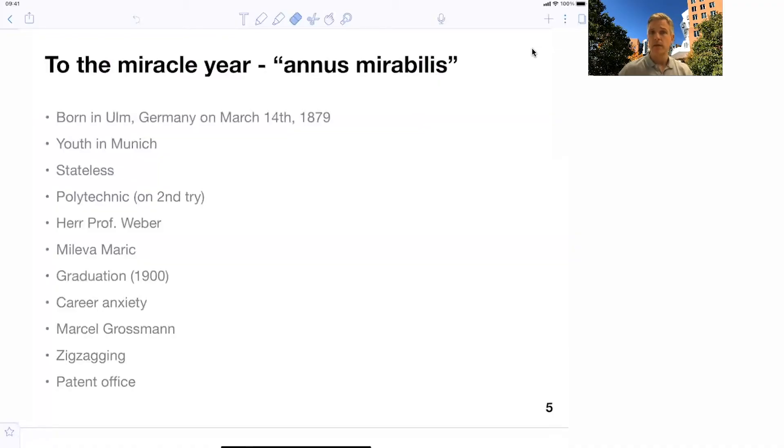In 1900, Einstein graduated. He wasn't the best student in class, neither was Mileva Maric. And he had a hard time finding a career. So he wanted to stay at the university and enter an academic career. And that required the mentors to be in favor of this. And since Einstein didn't quite develop a good relationship with Weber and the other professors around, they didn't want him there. They didn't promote his career.